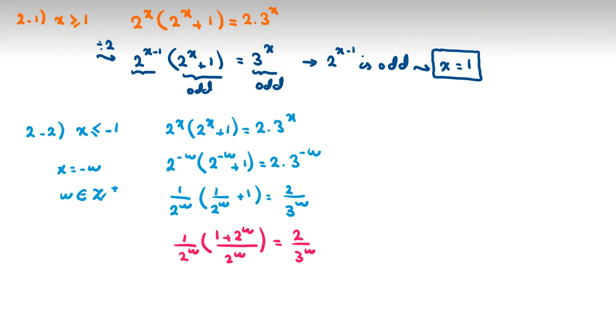So we multiply both sides by 4 to the w times 3 to the w. The left-hand side will be 3 to the w, 1 plus 2 to the w, right-hand side is 2 times 2 to the w, 2 to the w, which will be 4 to the w.